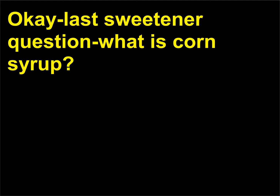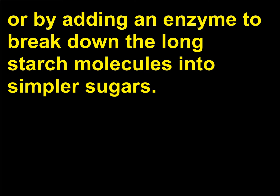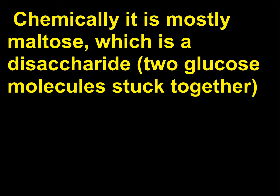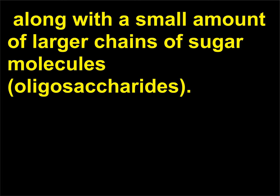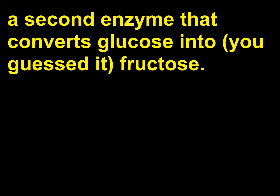What is corn syrup? Corn syrup is made from cornstarch, either by heating up starch in an acidic water solution, or by adding an enzyme to break down the long starch molecules into simpler sugars. Chemically it is mostly maltose, which is a disaccharide — two glucose molecules stuck together — along with a small amount of larger chains of sugar molecules called oligosaccharides. The high fructose variety is made by treating regular corn syrup with a second enzyme that converts glucose into fructose.